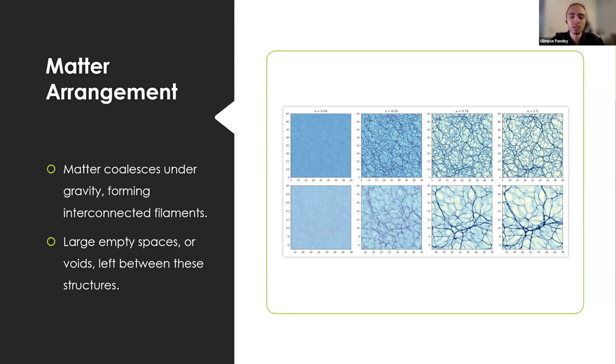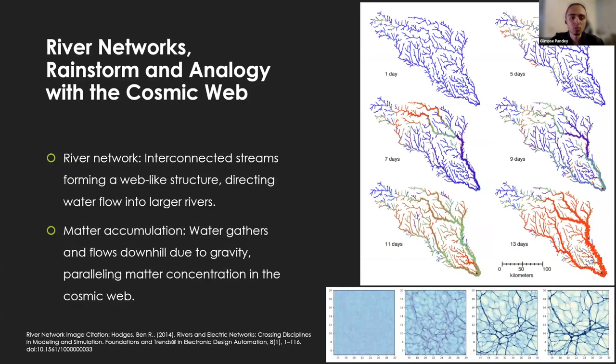There are some initial irregularities and perturbations, and then evolution happens accordingly. Talking about rainstorm as a precursor, we are trying to draw an analogy with river networks in nature. A river network is a complex system of interconnected streams and rivers that resemble a web.